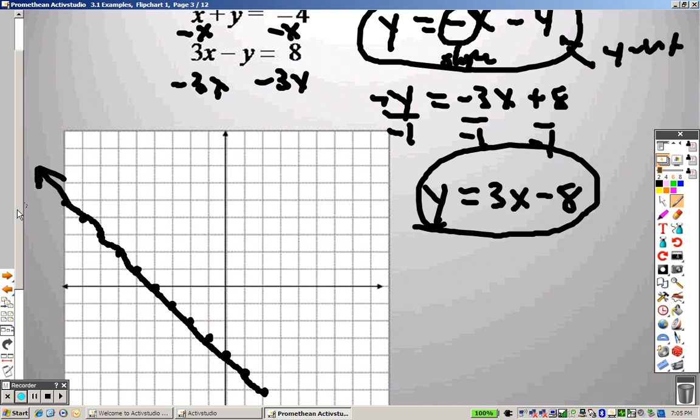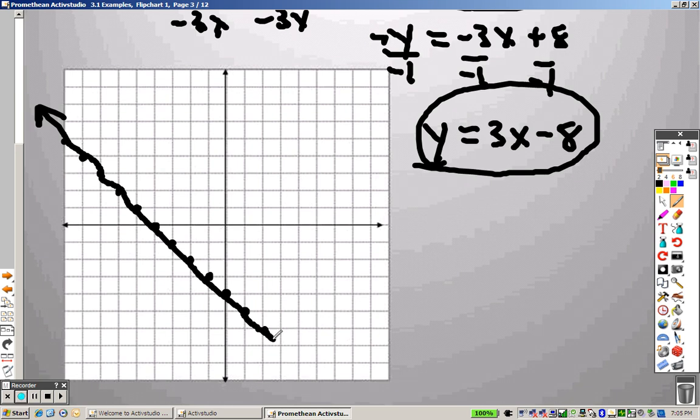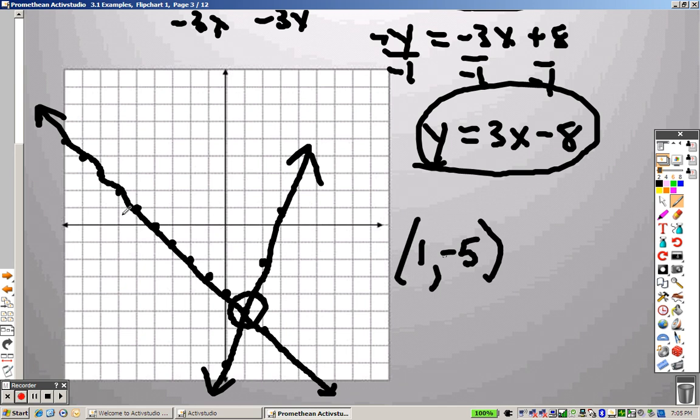Then the next one I'm supposed to graph has a y-intercept of negative 8. So that's 5, 6, 7, 8. Then up 3, right 1, up 3, right 1, up 3, right 1, and I draw a line. Wherever the graphs intersect is your answer. It intersects right there at 1, negative 5, which means your answer for that problem is (1, -5).